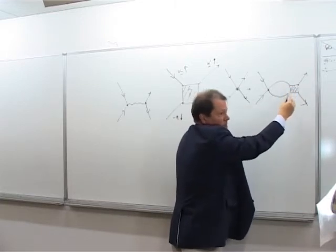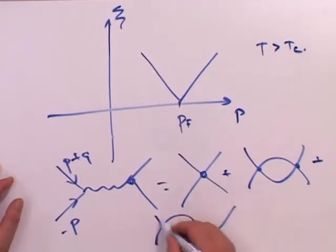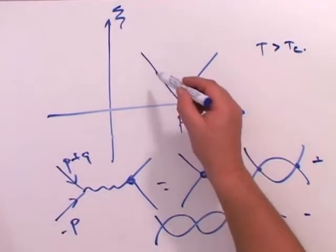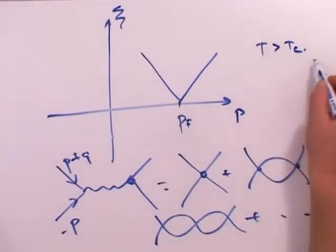So, taking into account in perturbation way summing all these diagrams, I see that in the quasiparticle spectrum of normal metal, at temperatures near Tc, appears the instability.